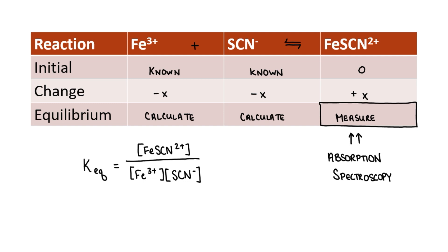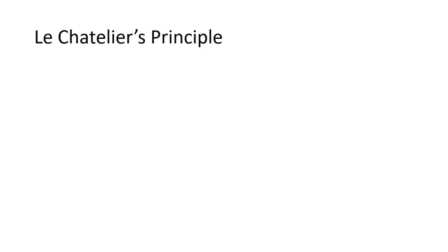So how can we measure color intensity? Using a spectrophotometer. Measuring color intensity or light absorption with a spectrophotometer requires us to make a standard or reference, and we are going to utilize Le Chatelier's principle for this.